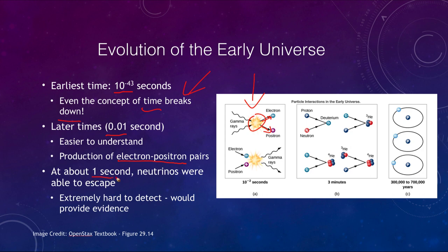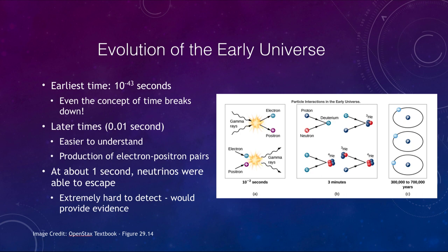About one second in, neutrinos were able to escape. The universe had finally reached a low enough density that neutrinos could travel freely. Before one second, even neutrinos were trapped and unable to escape — the universe was that dense. These neutrinos would be extremely hard to detect, but would give us evidence of the very early history of the universe.